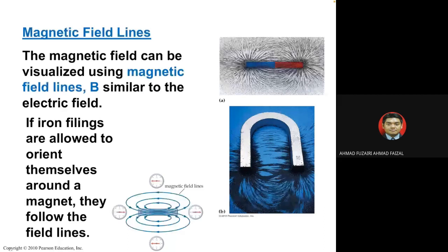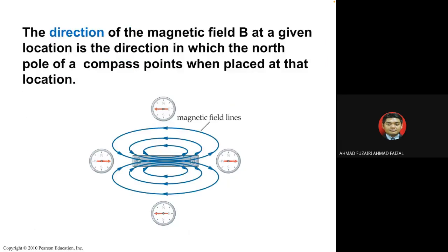The magnetic field lines come from the north pole and go into the south pole. This can be shown using a compass — place a compass around a permanent bar magnet and it shows you the directions of the magnetic field lines. This leads us to geomagnetism.